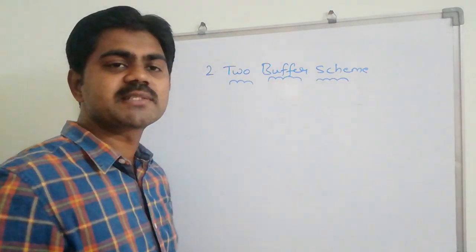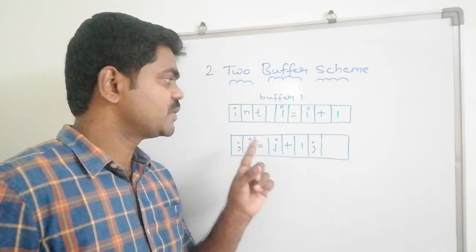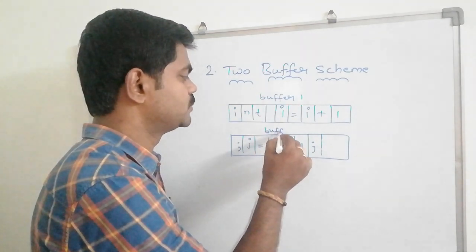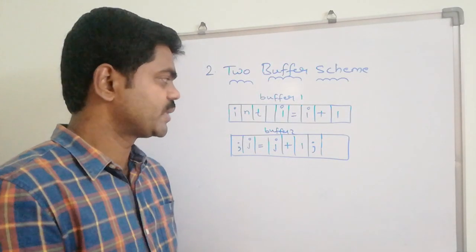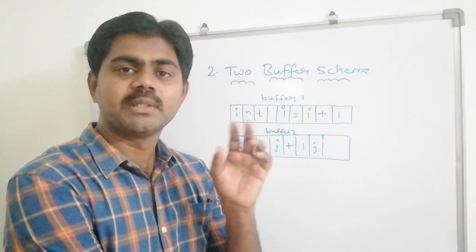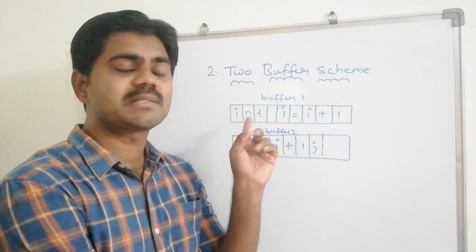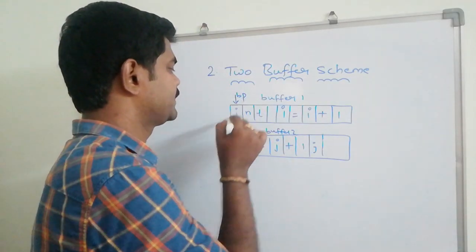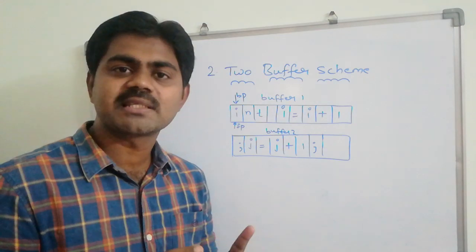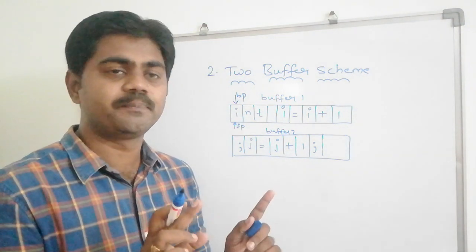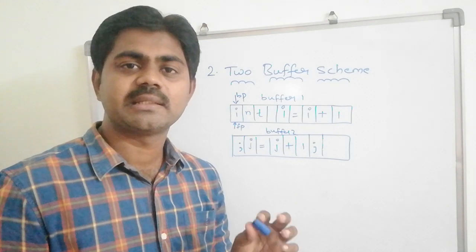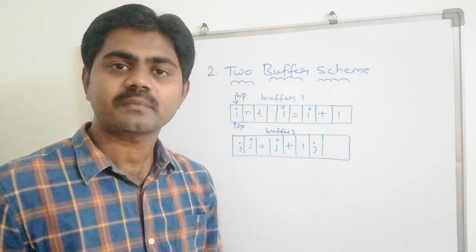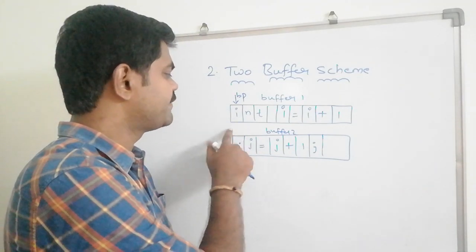In the two buffer scheme, the first one is buffer 1 and the second one is buffer 2. For example, consider the string: int i equal to i plus 1. My BP and FP will first point to 'i' — BP here, FP here. The same process applies as in the one buffer scheme: I encounter a blank space, and again BP and FP will point to 'i'. Then we ask: what if the endpoint of buffer 1 is reached?